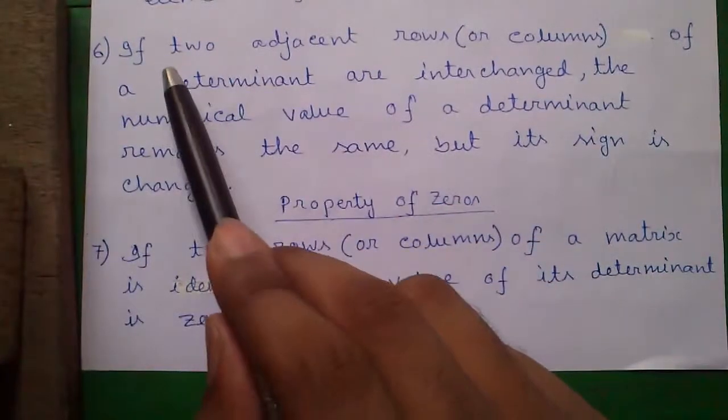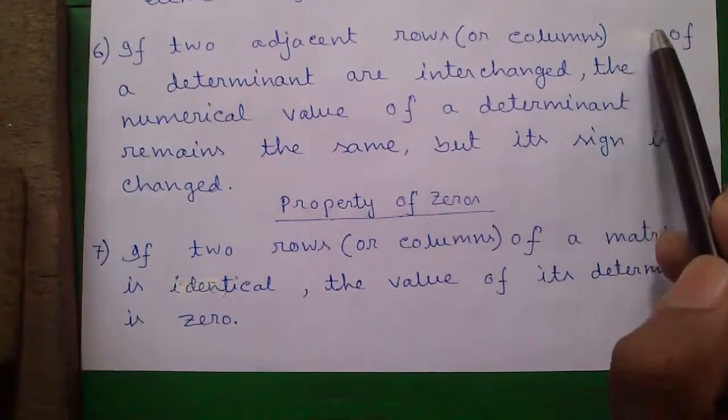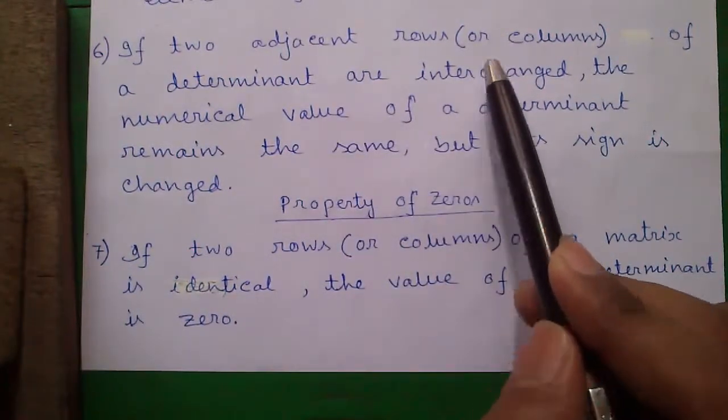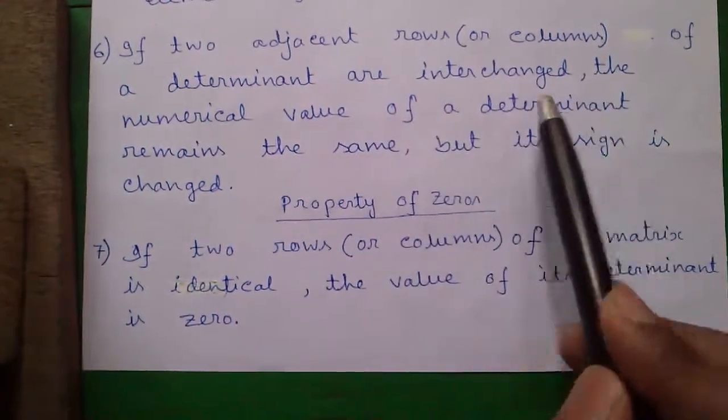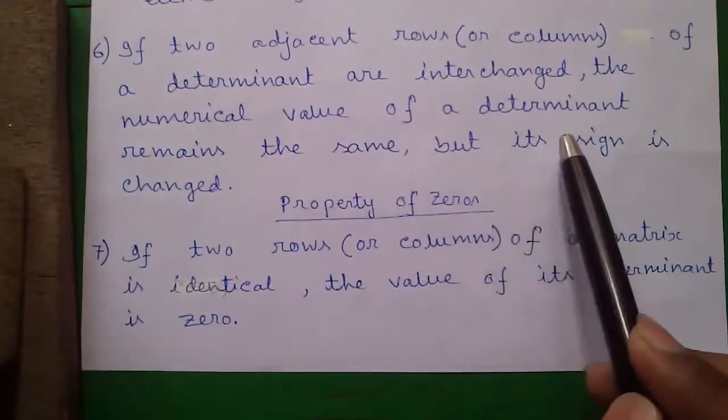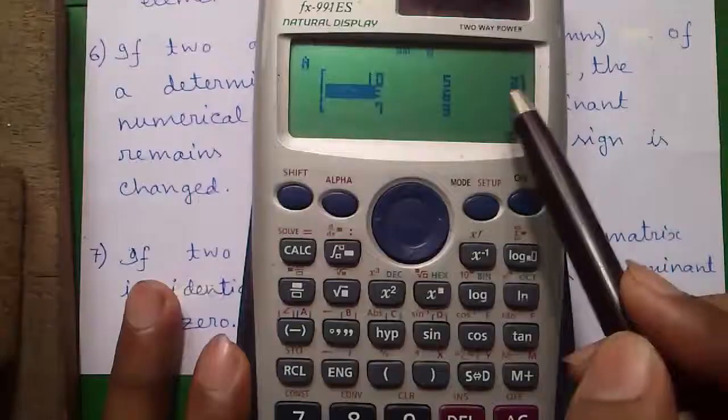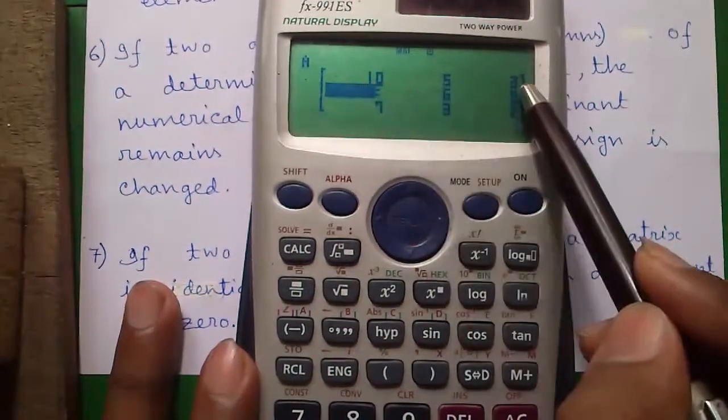Our sixth property: if two adjacent rows or columns of a determinant are interchanged, the numerical value of the determinant remains the same but its sign is changed.